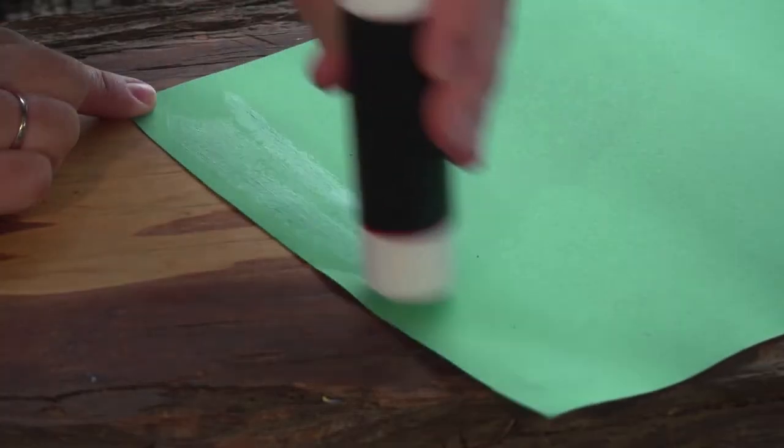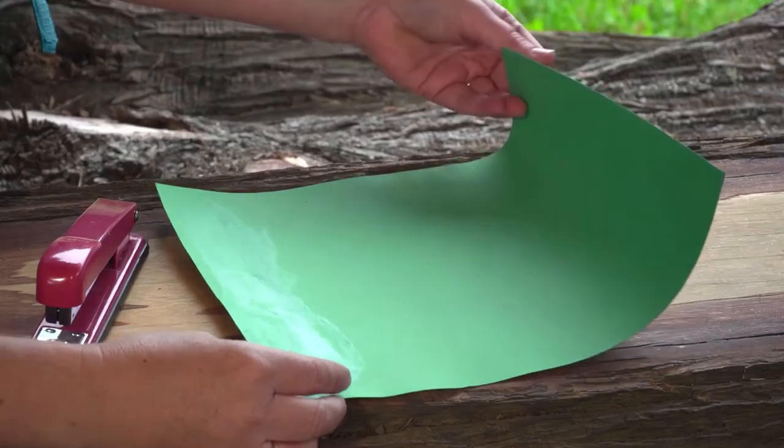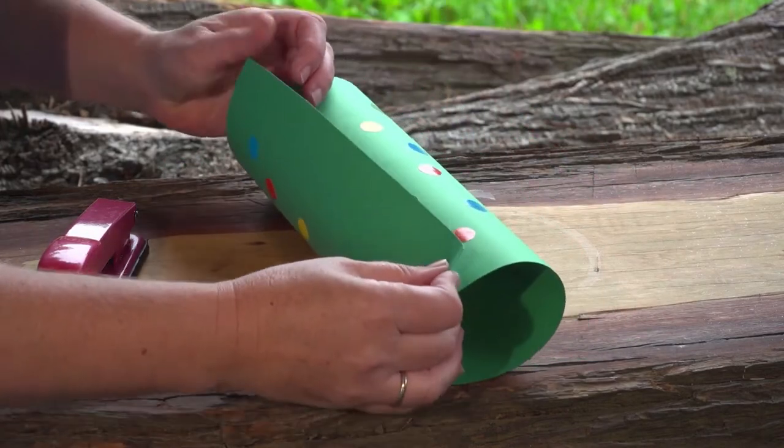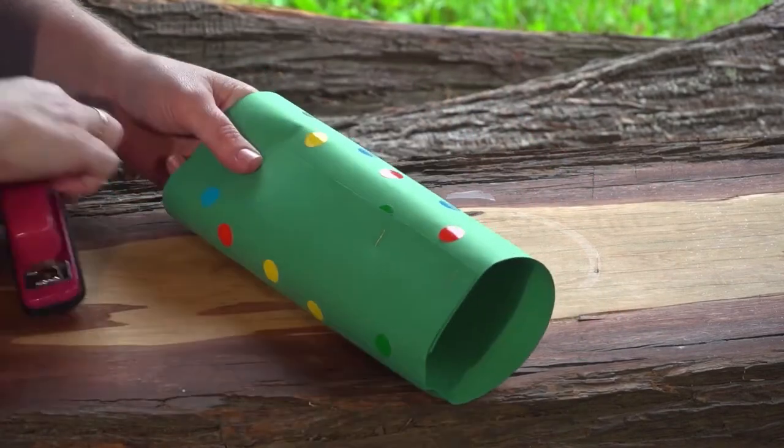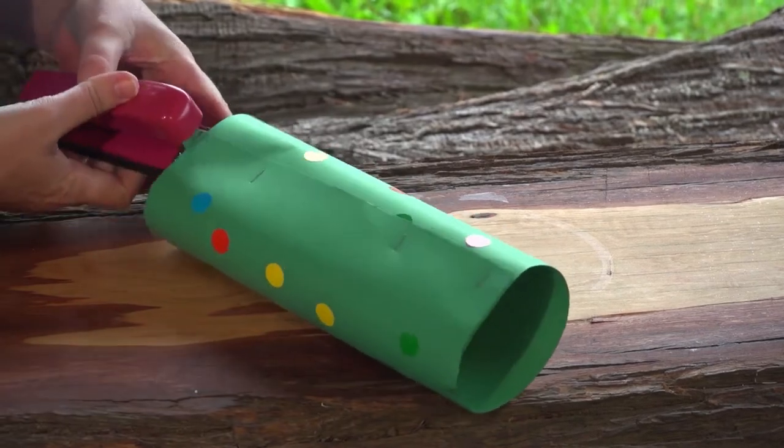Now put some glue on the back across an edge. Then roll the long edges together and stick in place with some staples to make it extra secure.